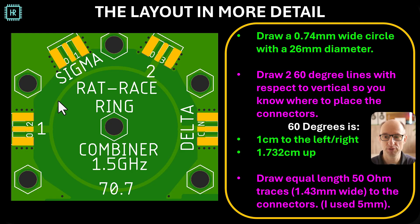So let's look at the layout in a bit more detail. We know we have to make a circle with a trace width of 0.74 millimeters and a 26 millimeter diameter. Now that's easy enough to make. Now you have to draw two 60-degree lines: 60 degrees from the center to the left top and 60 degrees from the center to the right top. And just to help you around, if you go 1 centimeter to the right, you have to go 1.73 centimeters up. You also do it on the other side: you do minus 1, 1.73.